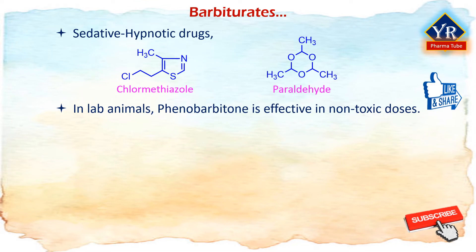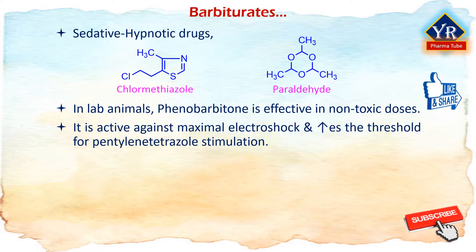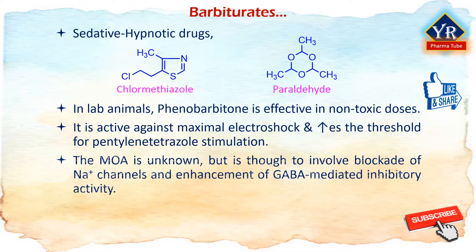In laboratory animals, phenobarbitone is effective by several tests in non-toxic doses. It is active against maximal electroshock and it elevates the threshold for pentylenetetrazole stimulation. The mechanism of anti-seizure action of barbiturates is unknown but is thought to act by suppressing activity of the central nervous system. Barbiturate anticonvulsants enhance the action of GABA, which is an inhibitory neurotransmitter, and inhibit initiation of discharge that would start the seizure. They facilitate GABA-mediated opening of chloride channels and increase effectiveness of GABA. Barbiturates are used to treat all types of seizures except absence seizures.